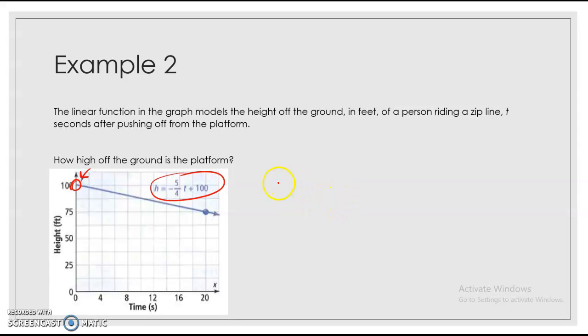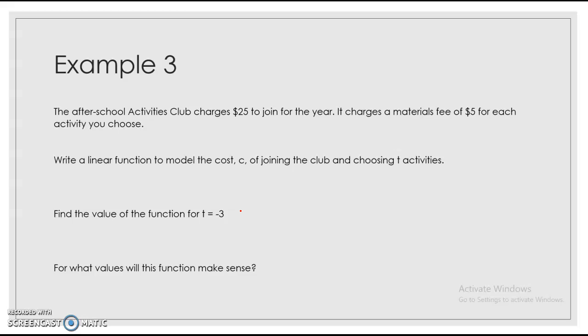So we're looking for that initial value. And whether we find it in the graph or whether we find it in our equation, right, our y-intercept, we know that the platform is starting off 100 feet from the ground. And so that's our initial value on this one.